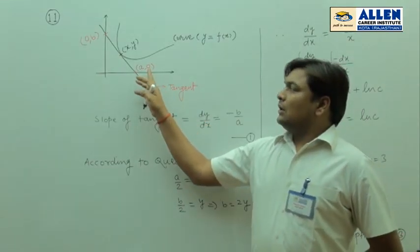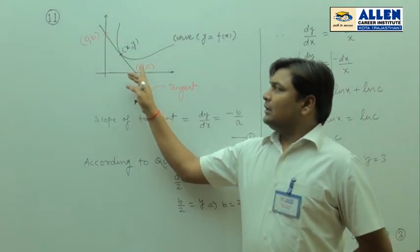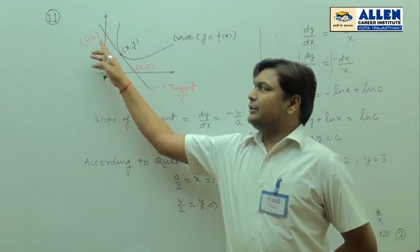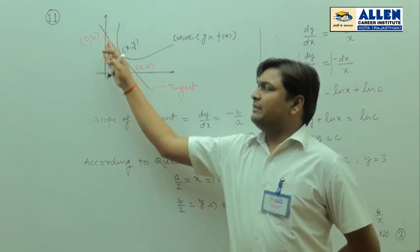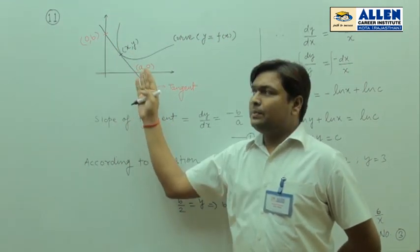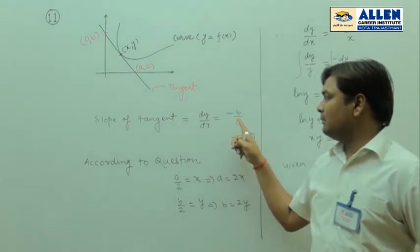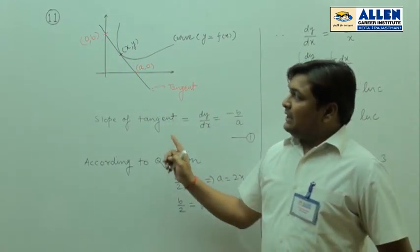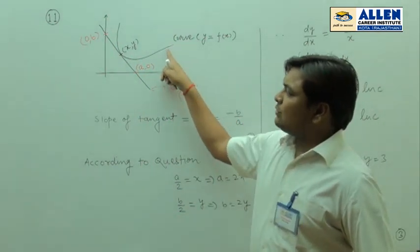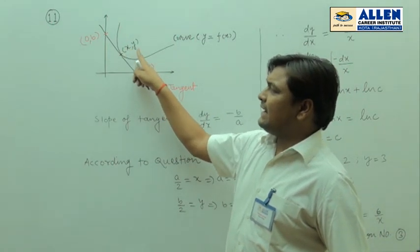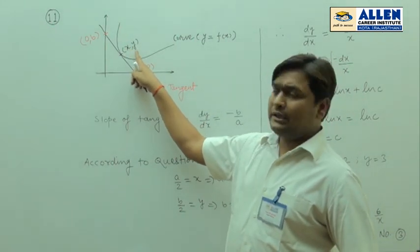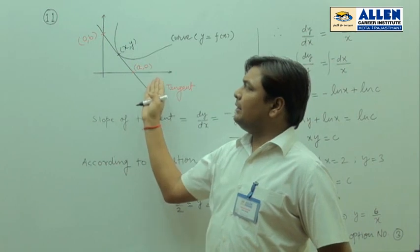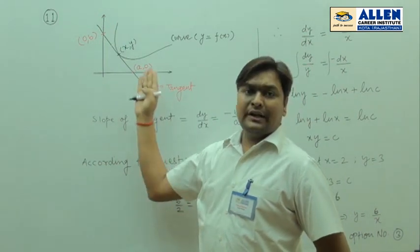Because from the two points (x1, y1) and (x2, y2), when we find out the slope, it becomes minus b by a. But in this question, it is given that the point (x, y) is bisecting the segment between the coordinate axes.